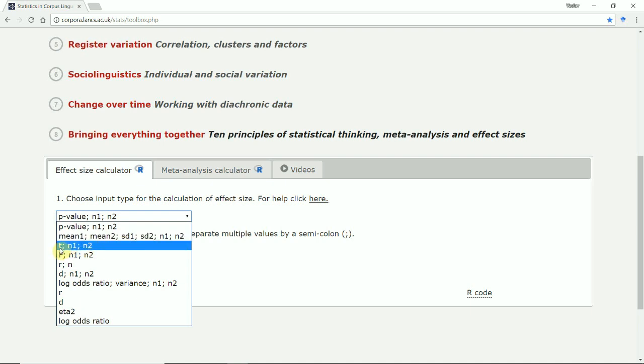If we calculate a t-test, we'll get a t-value and two sample sizes. For ANOVA, we'll get an f-value and two sample sizes. R is the correlation coefficient, and again, the size of the corpus in terms of the number of texts or speakers.